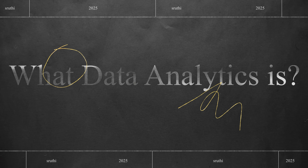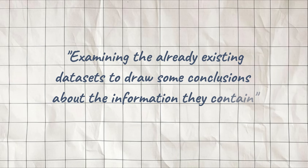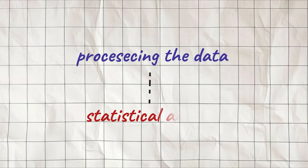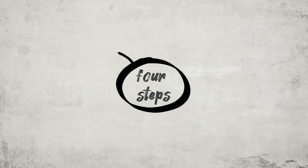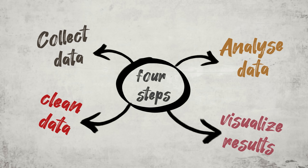Now let's get back to the video. Firstly, let's try to understand what data analytics is. Data analytics is about examining already existing datasets to draw some conclusions about the information they contain. The major part of data analytics is processing the data and performing statistical analysis. Generally, when working on a data analytics project, there are four standard steps: first is to collect data, then clean data, analyze data, and finally visualize the results.